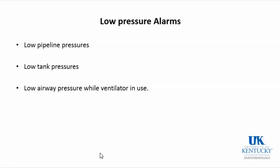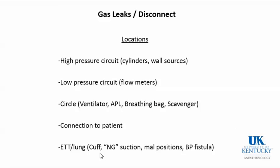We have a number of low-pressure alarms: pipeline pressure, tank pressure, and airway pressure, all previously discussed. There is also the problem of leaks and disconnects. Leaks can occur at many locations: the high-pressure circuit from wall sources and cylinders, the flowmeters, the circle circuit, the patient connection, the endotracheal tube, and within the patient.